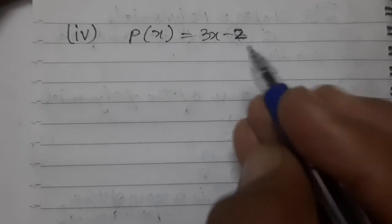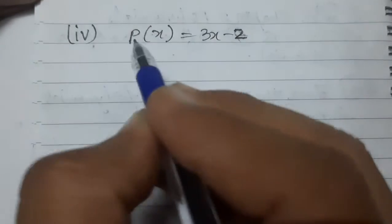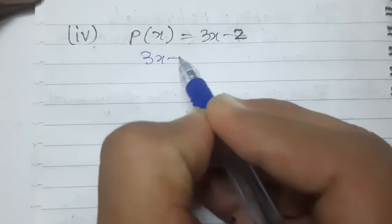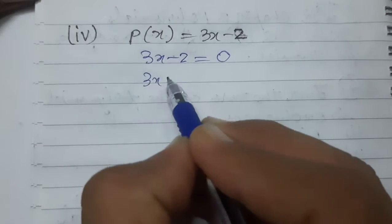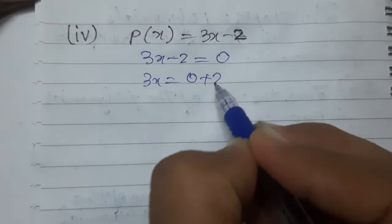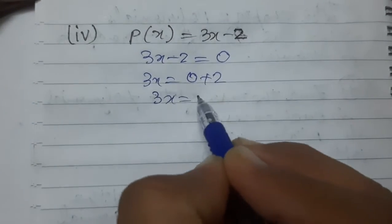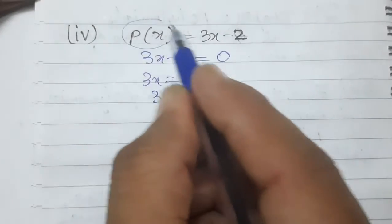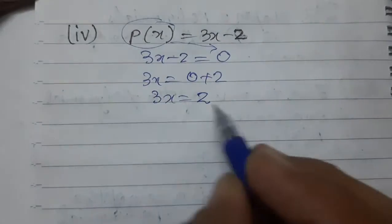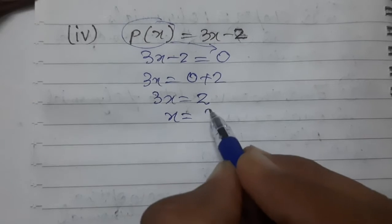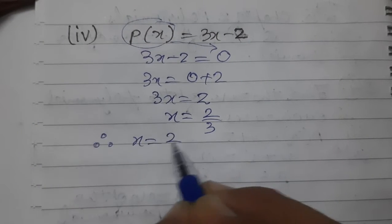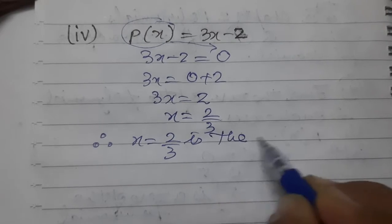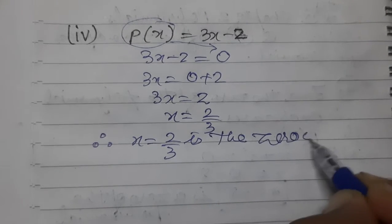Now see the next one. Again we need to find the zero. So put this equal to zero: 3x minus 2 equals zero. Then 3x equals 2. Therefore, x equals 2 by 3 is the zero of the polynomial.